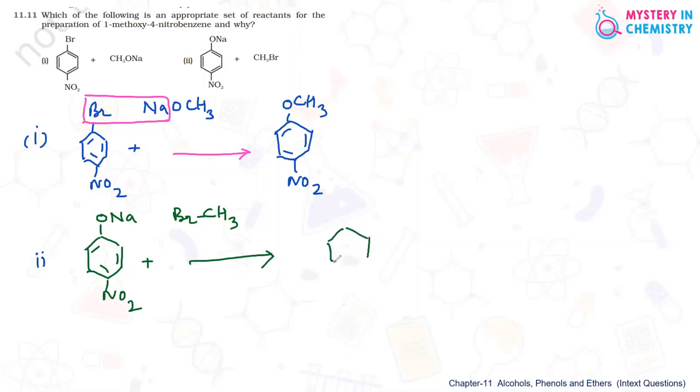Here also the product should be seen. Methoxy group should be at the first position and nitro group should be here. Here also sodium bromide is coming out of this reaction and by this methoxy group is coming over the first position.